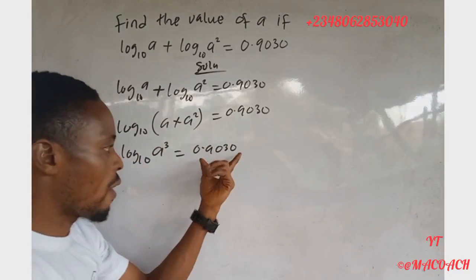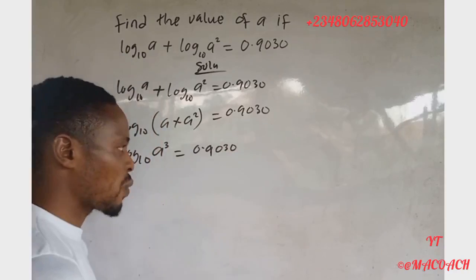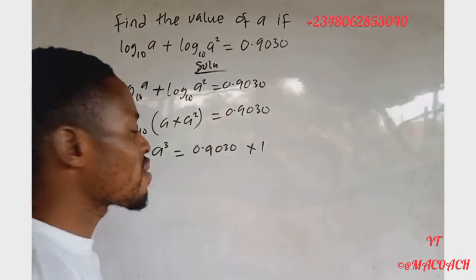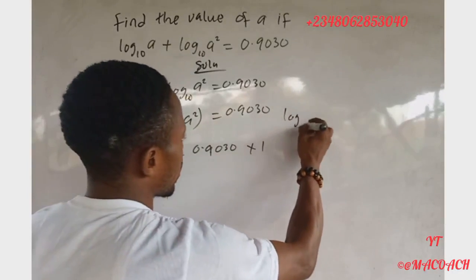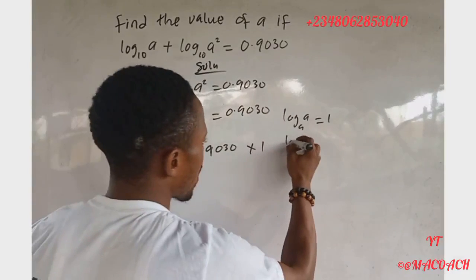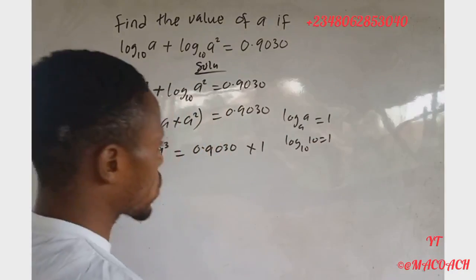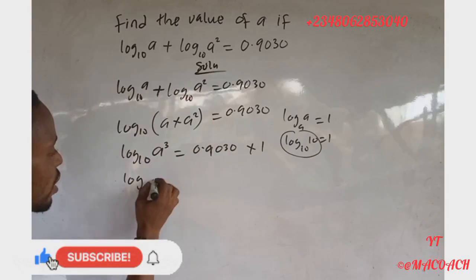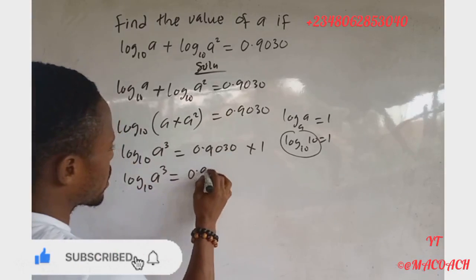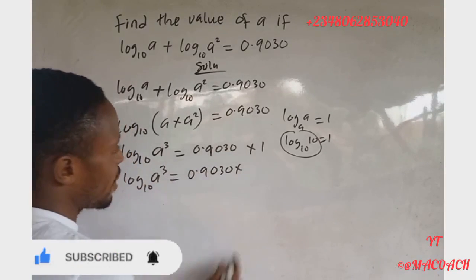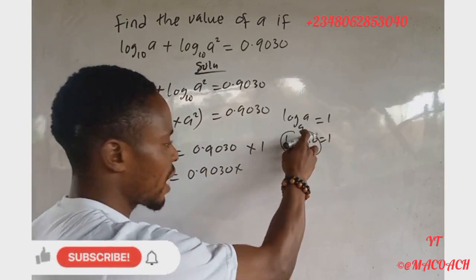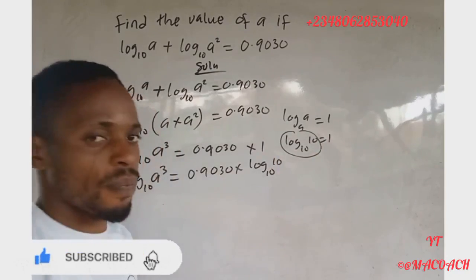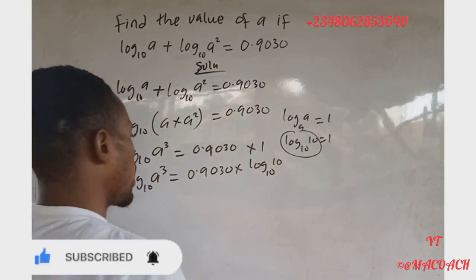On the right-hand side we can expand this. We multiply by one, because one times this still gives us this. Now we remember the law of logarithms that says log base 10 of 10 equals one. Therefore we replace the one on the right-hand side with log base 10 of 10.